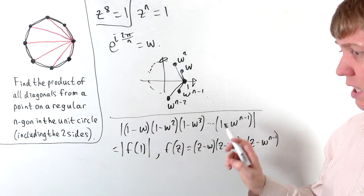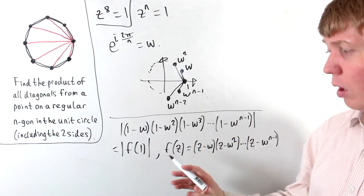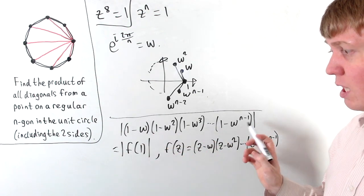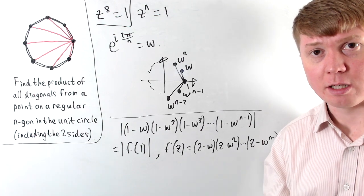So we've got the product of all of these lengths is the modulus of f of 1, where f of z is a function. If we substitute in z equals 1 and take the modulus, we're back to the products that we're interested in.